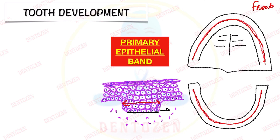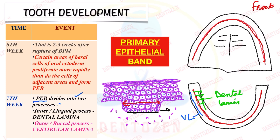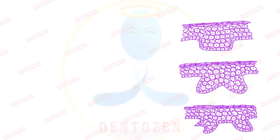This primary epithelial band will further divide into two processes. One toward the inside — the lingual or inner process — is called the dental lamina. Another process, which develops toward the outside — the buccal or outer process — is known as vestibular lamina.